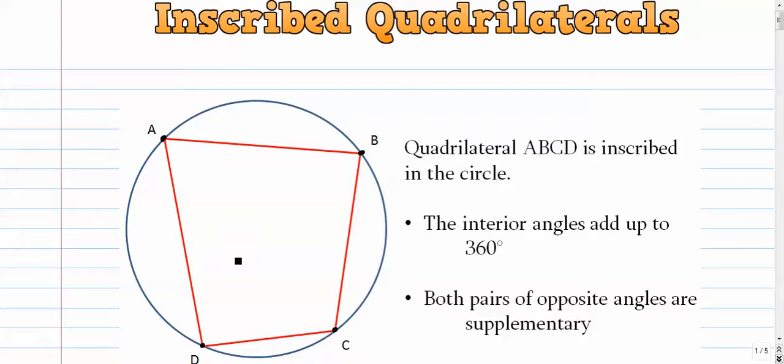That is the definition of the word inscribed. It means that a polygon is inside a circle. In the previous video, we saw examples of triangles or quadrilaterals that are circumscribed around a circle, but here we have inscribed meaning inside.